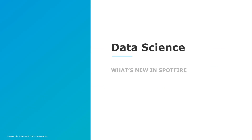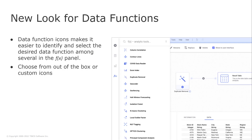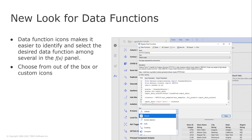In the data science area, we now have a new look for data functions. Data functions can now be displayed with icons in the FX panel for faster identification and faster selection among the list of data functions. Sometimes this is a long list, and the list of available data functions is growing. From a data function developer point of view, you can now assign an icon to a data function, either from a list of predefined category-based icons or using your own custom SVG icon.